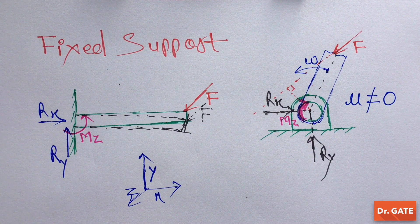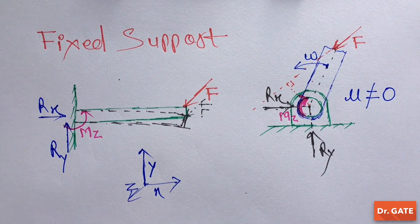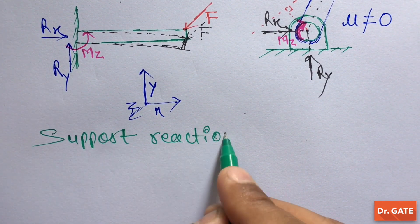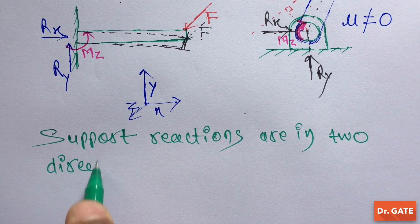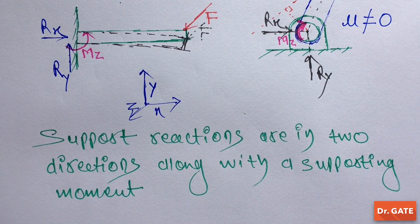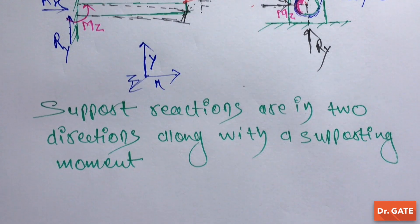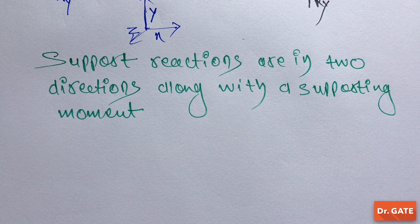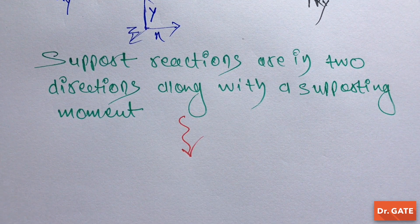So here you can see that in these diagrams, support reactions are in two directions along with a supporting moment. So whenever a support can apply reactions in two directions and also a reactive moment, then that support is known as fixed support.